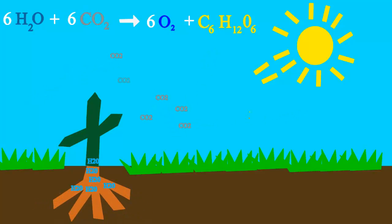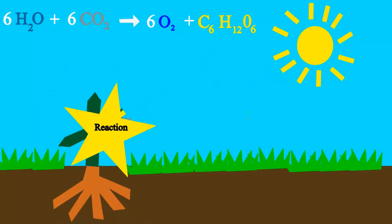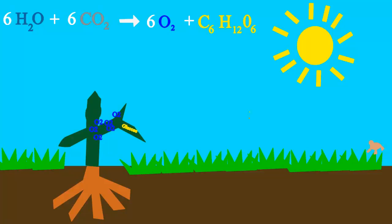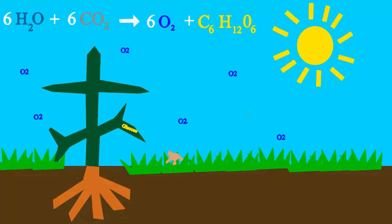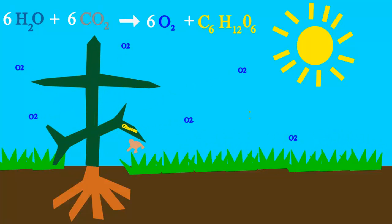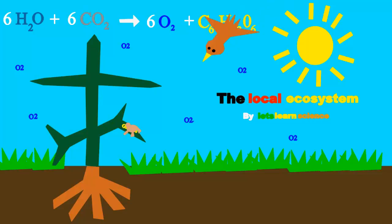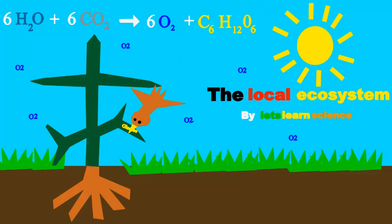Plants take water, sun and CO2 to make glucose, the sugar that they use for food. They also put oxygen into the air so we can share, because oxygen is everywhere.